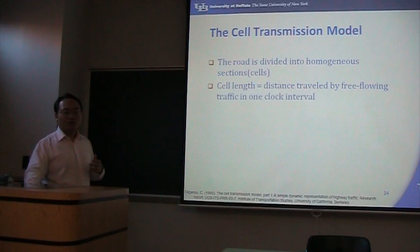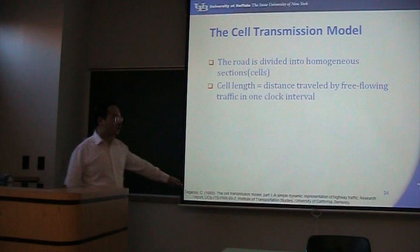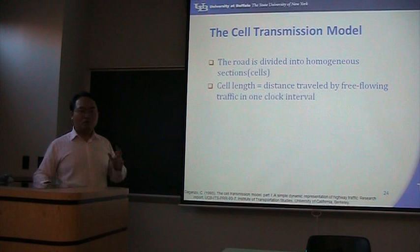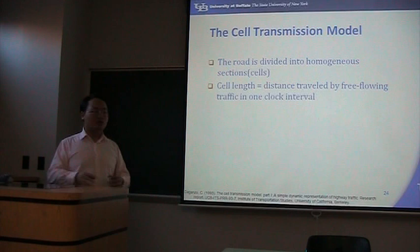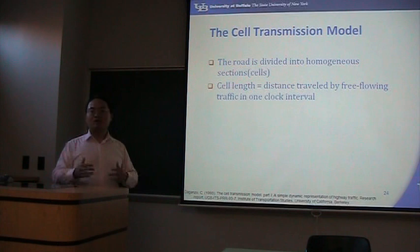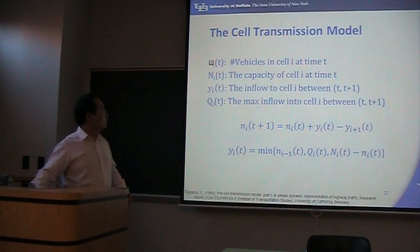The two models have very different purposes. The Cell Transmission Model was developed by Di Ganto from UC Berkeley in 1993 and was designed to study shock waves — specifically, to provide a simple analytical method to study the effect of shock waves. It employs many simplifying assumptions and is not intended for microsimulation; it is an analytical method.